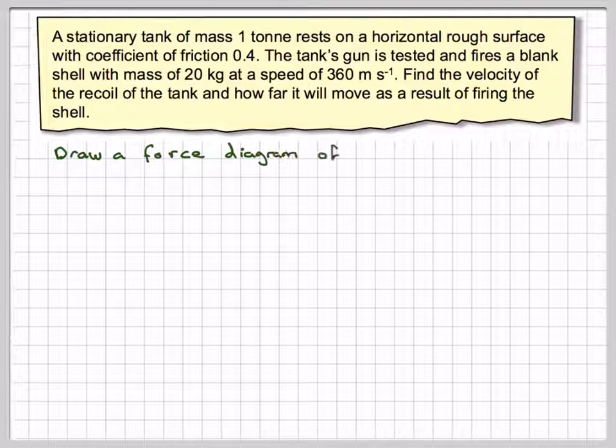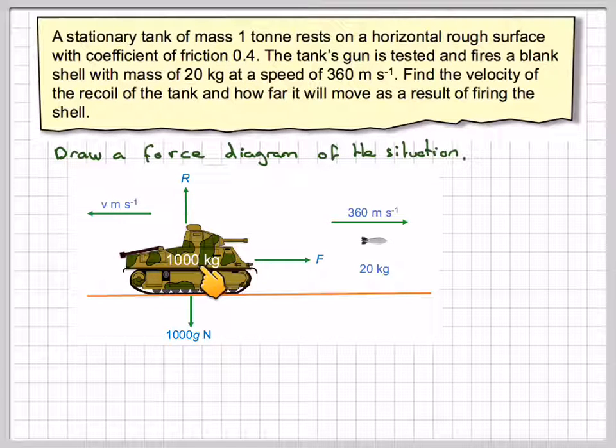If we draw a force diagram of the situation, here's my tank, 1,000 kilograms. 1 ton is 1,000 kilograms, so it's a very light tank.